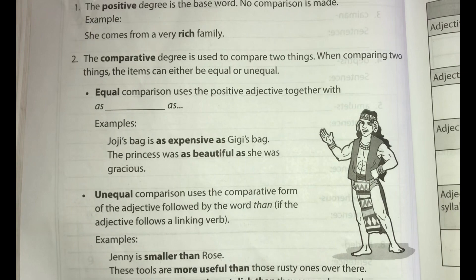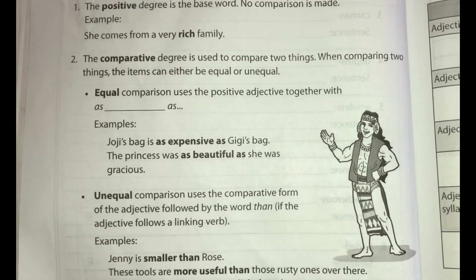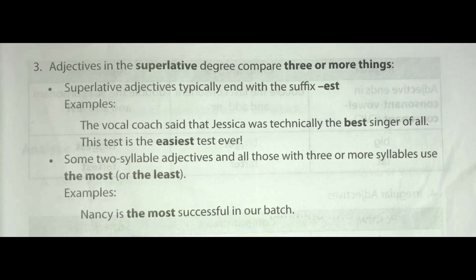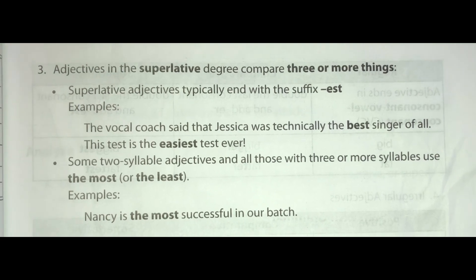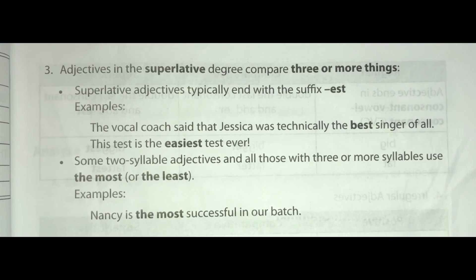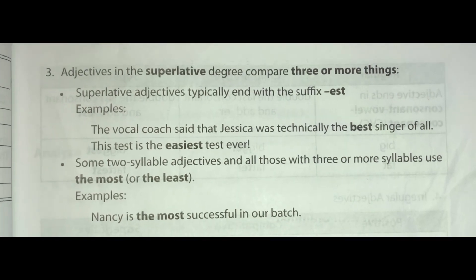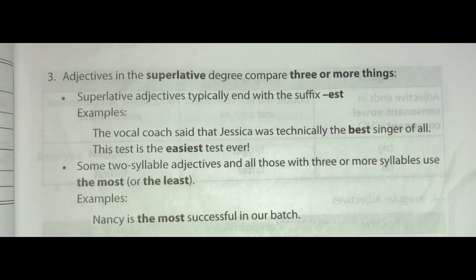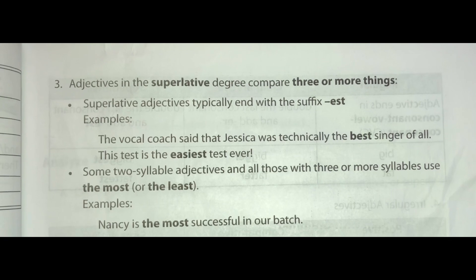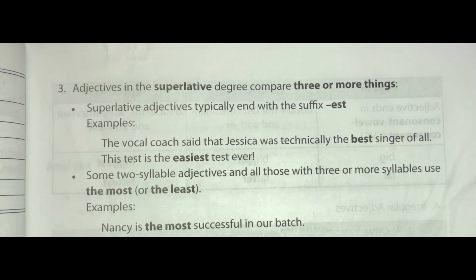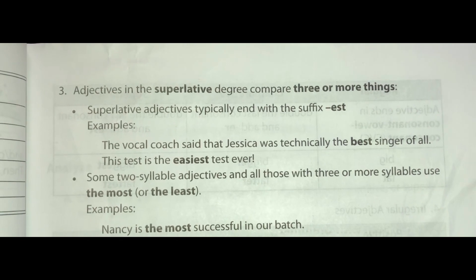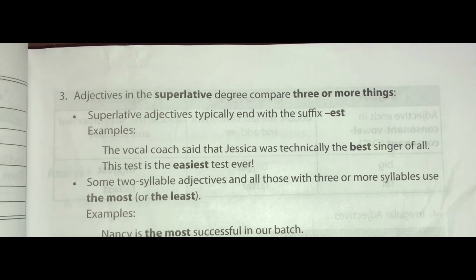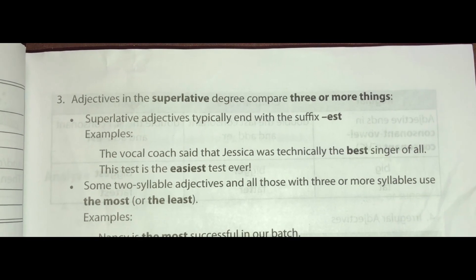Those shoes now seem less stylish than they seemed a month ago. Number three: adjectives in the superlative degree compare three or more things. Superlative adjectives typically end with the suffix -EST. Examples: the vocal coach said that Jessica was technically the best singer of all. This test is the easiest test ever. Some two-syllable adjectives and all those with three or more syllables use 'the most' or 'the least.' Example: Nancy is the most successful in our batch.